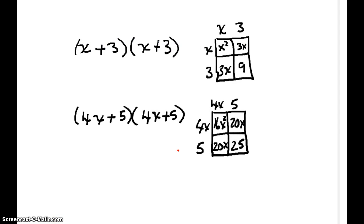You can see over here that I've taken two binomials, x plus 3 times x plus 3, and I've used the box method and found x squared, 3x, and 9. And if we bring those together, we have x squared plus 3x plus 3x plus 9. And that obviously simplifies to x squared plus 6x plus 9.